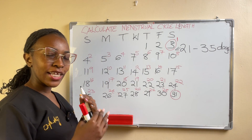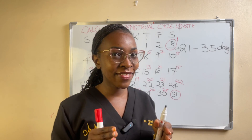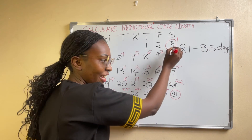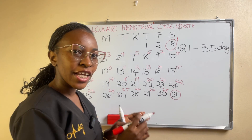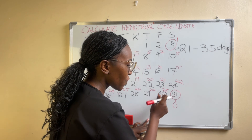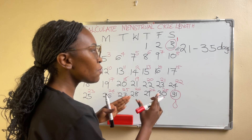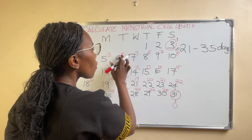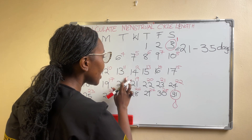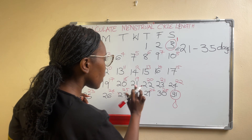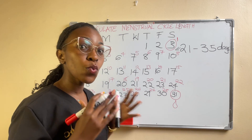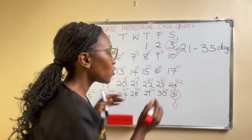So how do we calculate her menstrual cycle length? We said that your menstrual cycle length is the number of days from the first day you receive your period — which is day one here — to the last day before you receive your next period. She received her next period here, so the last day before that is day 28. Counting from day one to day 28, the number of days is 28. So this woman has a menstrual cycle length of 28 days.